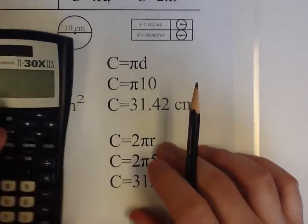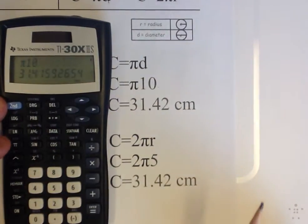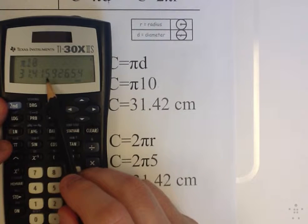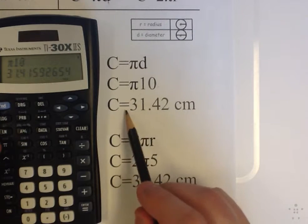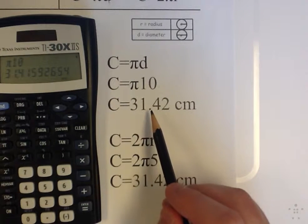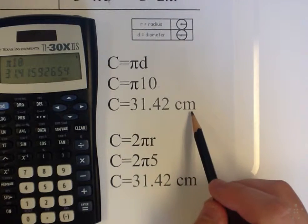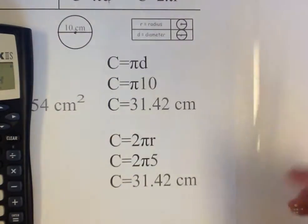C equals, and then I simply do on my calculator, I perform this operation. Pi 10 equals 31.415. The 5 tells me to round my 1 up to a 2. My answer is C equals 31.42 centimeters. No squared, just centimeters because I'm just finding the distance around the circle.